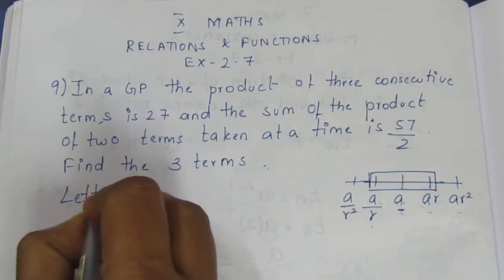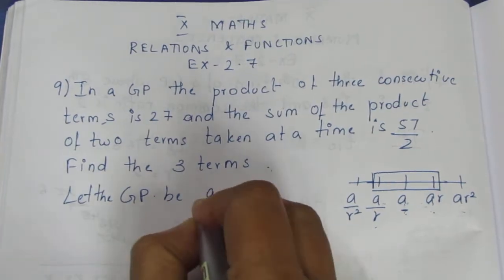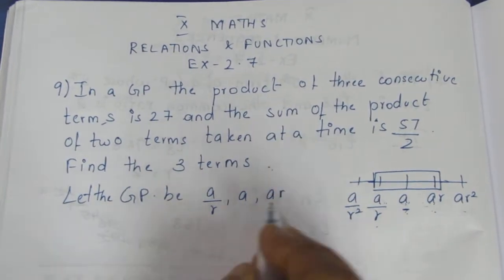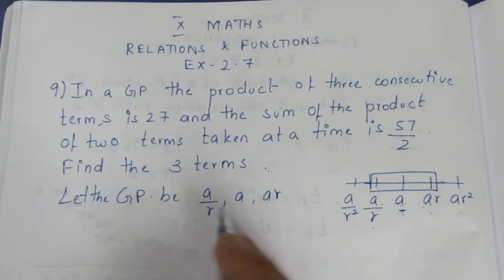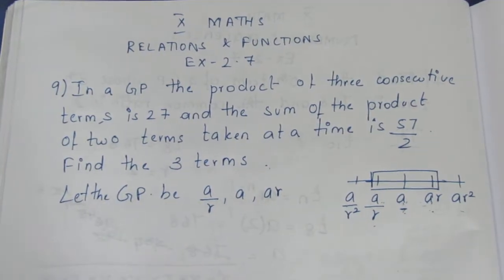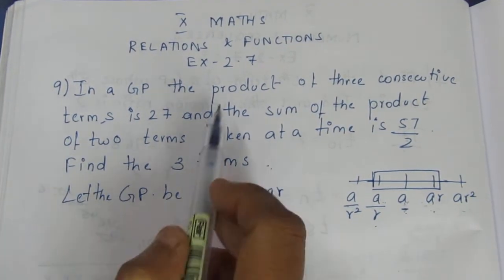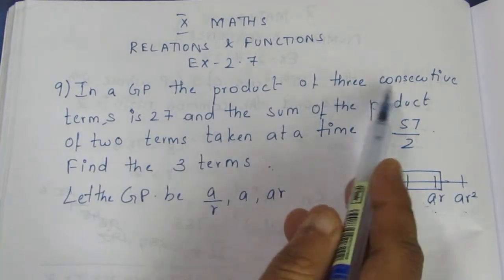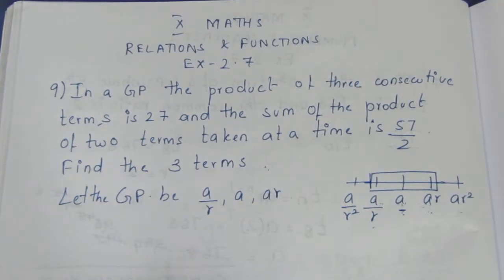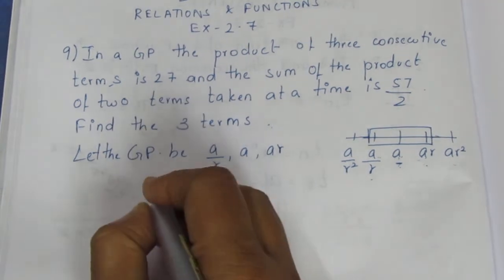Let the GP be A by R, A, AR — first term, second term, third term. If you want to find the product, you will multiply them. The product of the three consecutive terms is 27. If we multiply A by R into A into AR, we get 27.